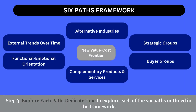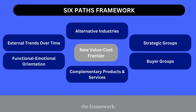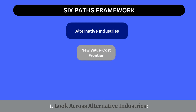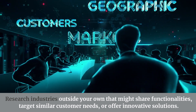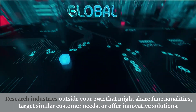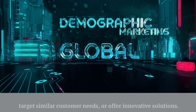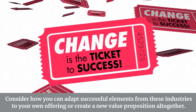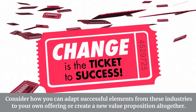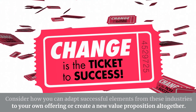Step 3: Explore each path. Dedicate time to explore each of the six paths outlined in the framework. Path 1: Look across alternative industries. Research industries outside your own that might share functionalities, target similar customer needs, or offer innovative solutions. Consider how you can adapt successful elements from these industries to your own offering or create a new value proposition altogether.